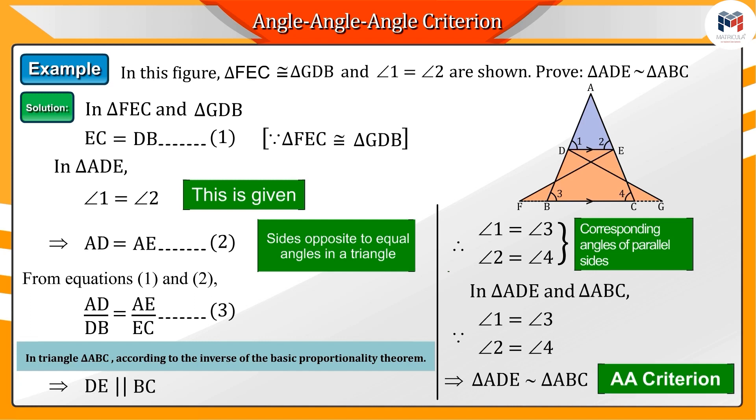Hence, by the AA criteria, triangles ADE and ABC become similar. This is what we had to prove.